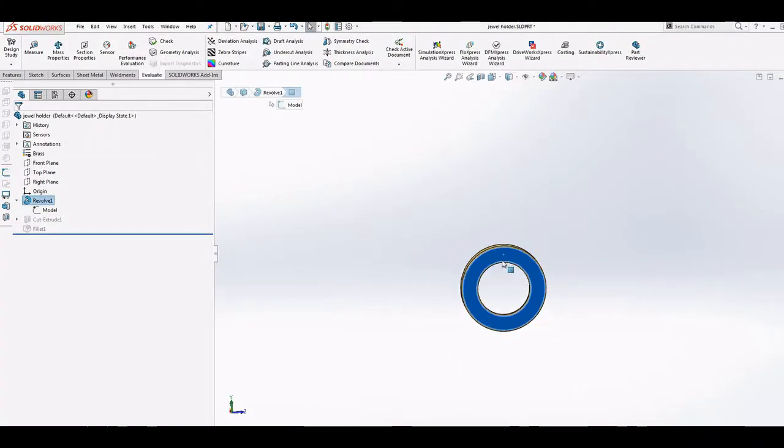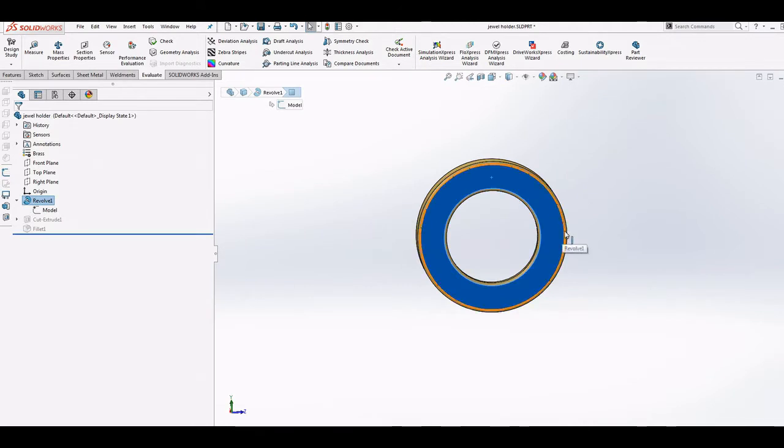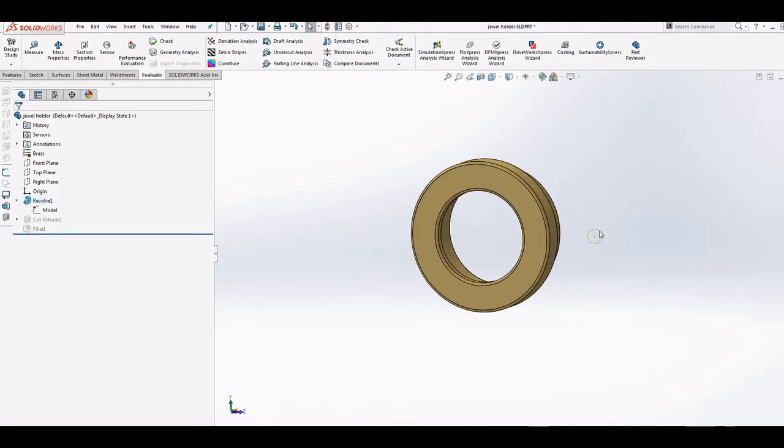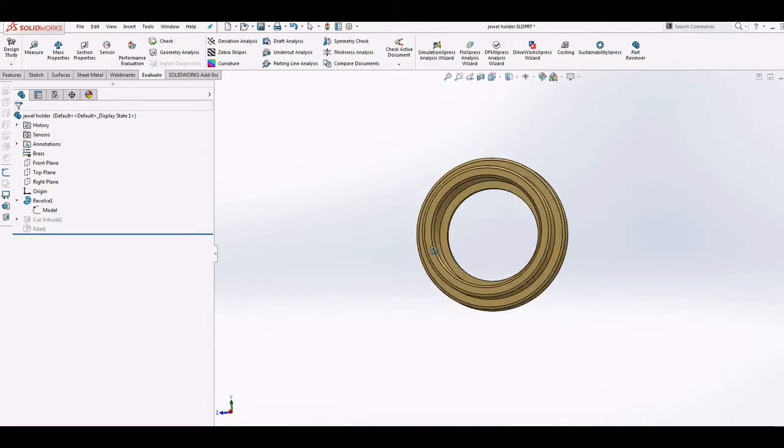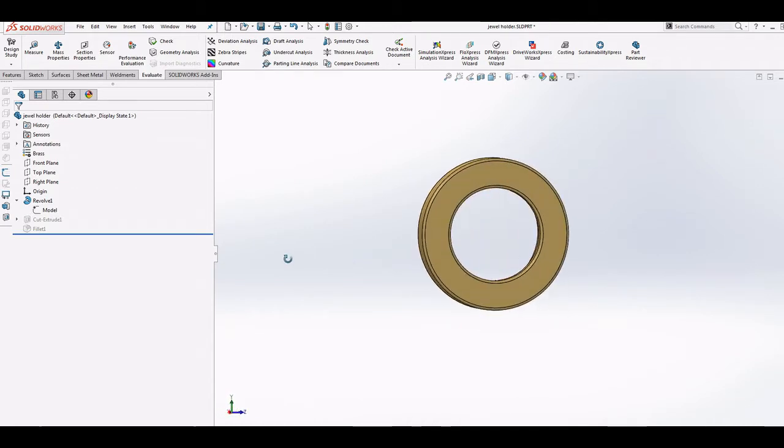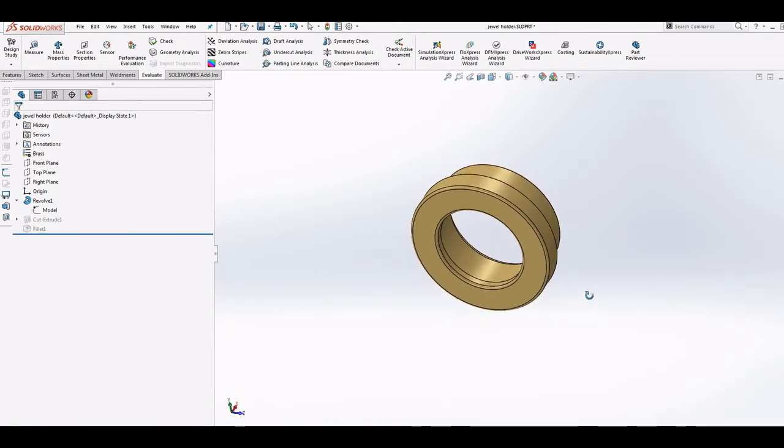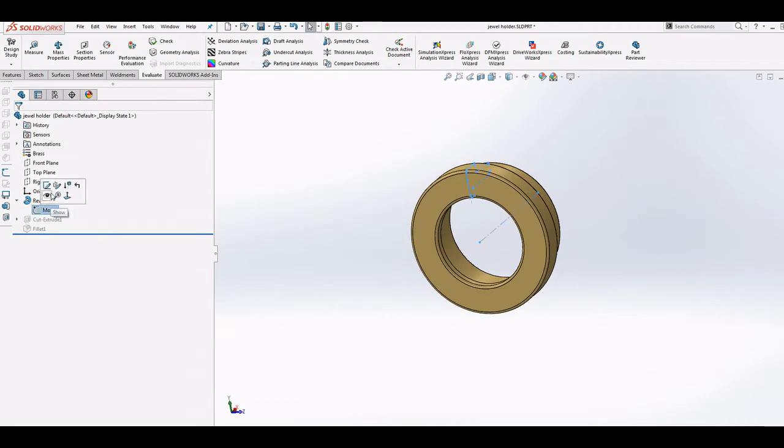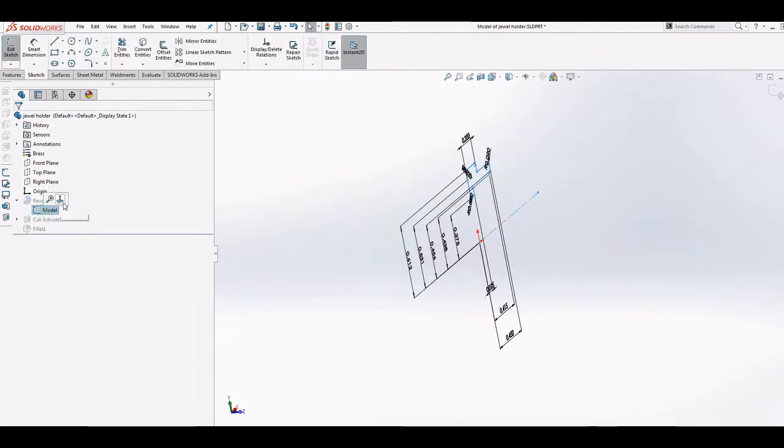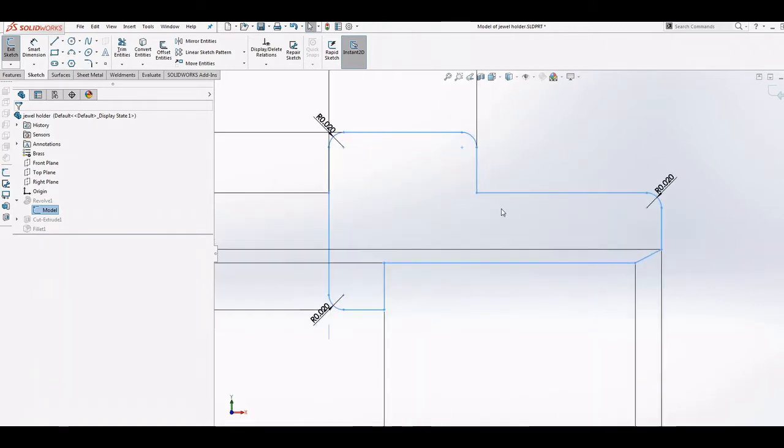Now we will quickly switch over to Solidworks and show the part we will be making. This is a custom end cap we will be turning from our brass stock. The part will require both internal and external turning steps to complete the design. If we open the sketch here you can see a section view of the part. We will export this sketch and save it as a DXF then import it into our CAM program.